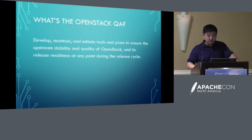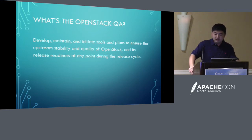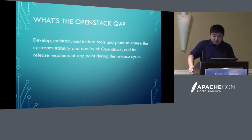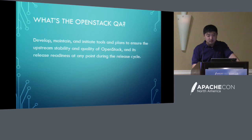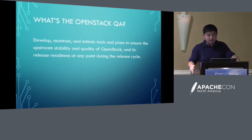So what's the OpenStack QA? The OpenStack QA is defined as developing, maintaining, and initiating tools and plans to ensure the upstream stability and quality of OpenStack, and its release readiness at any point during the release cycle. The OpenStack QA project team is made of multiple projects, each running independently towards the goal of making OpenStack work more stable.